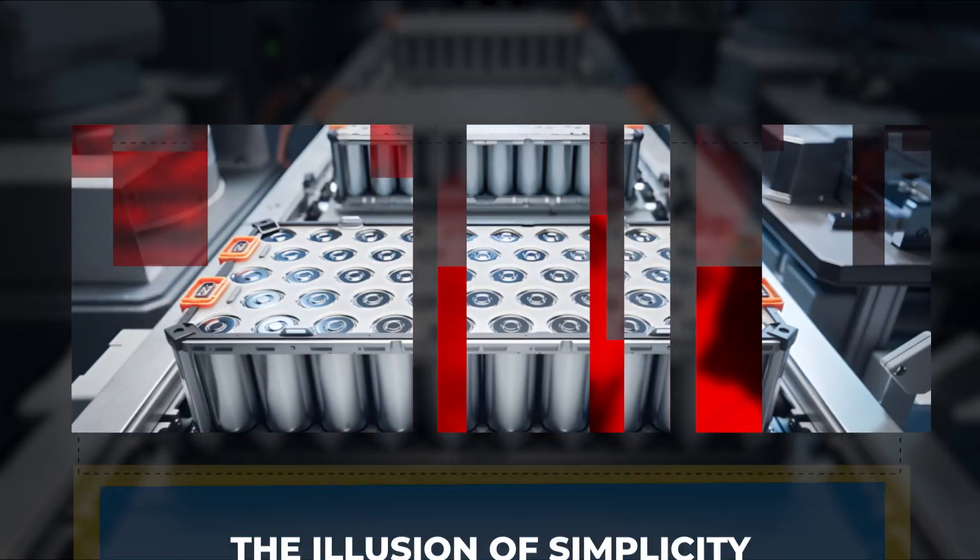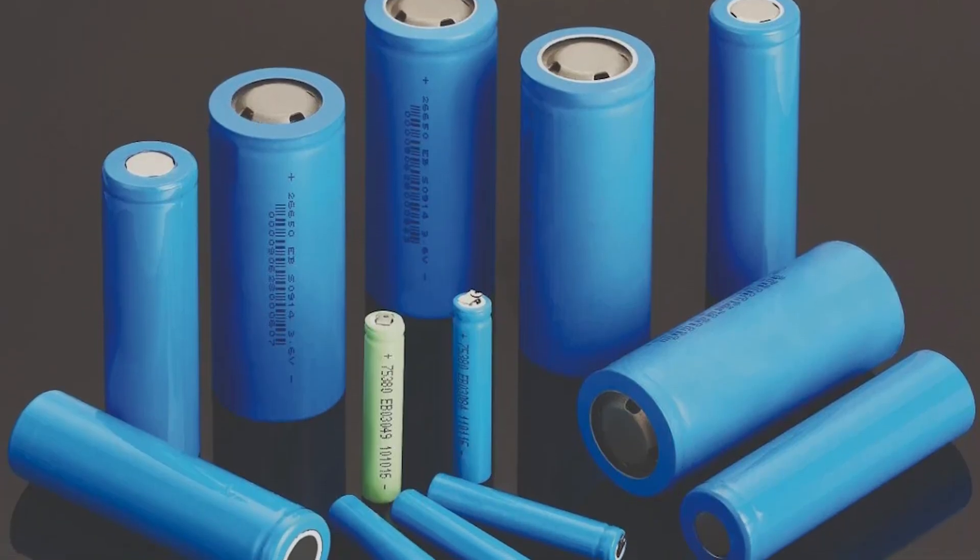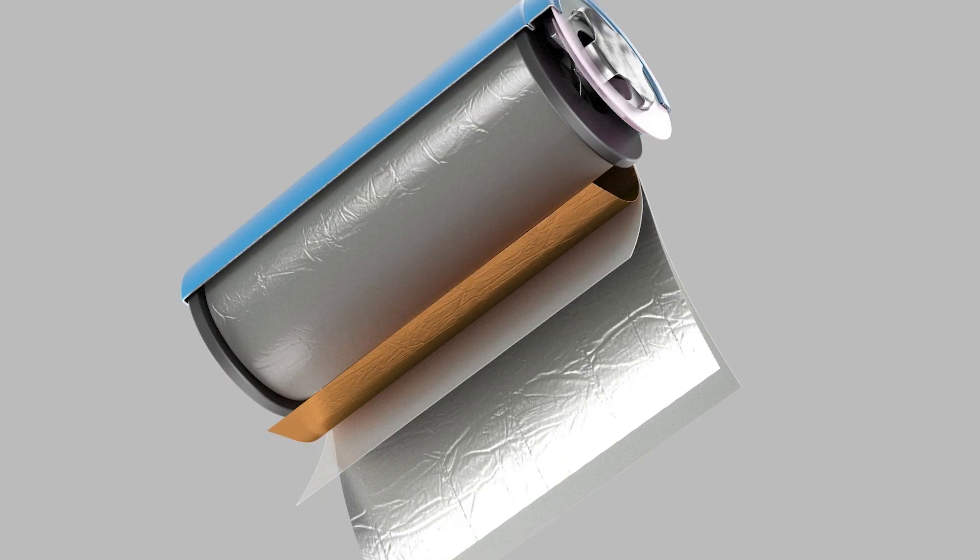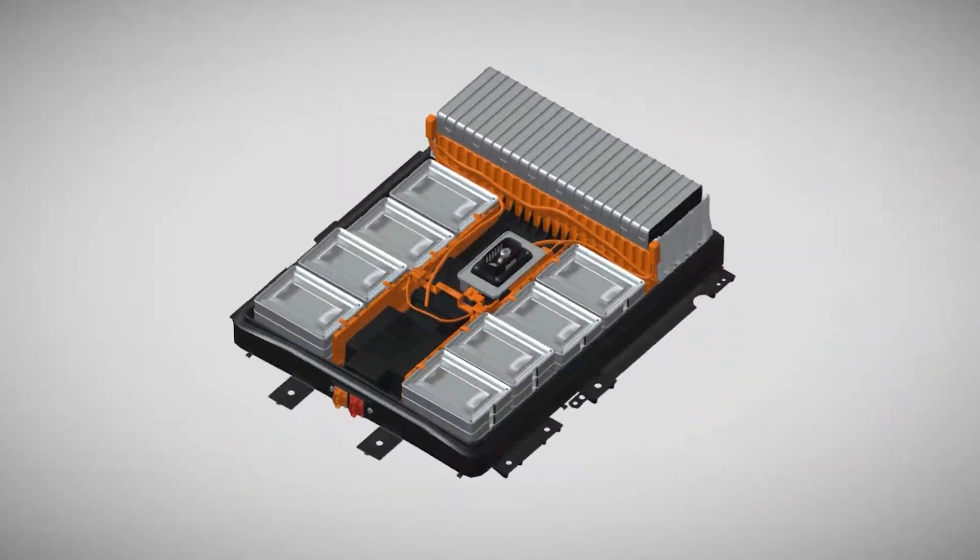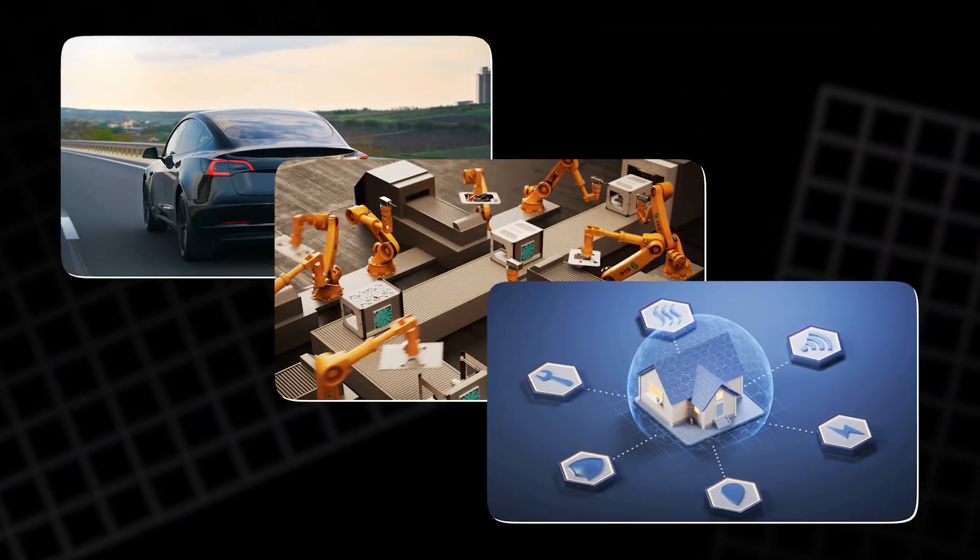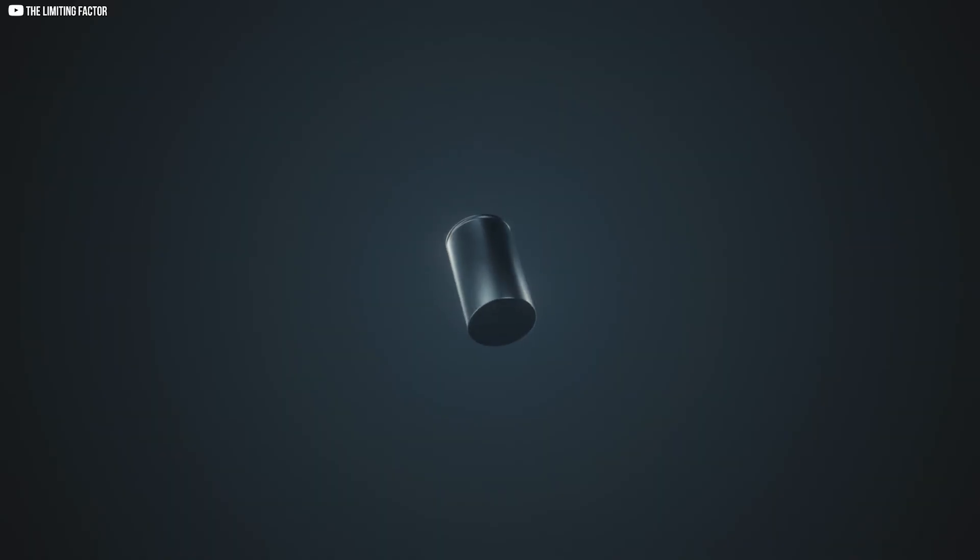At first glance, a lithium-ion battery seems ordinary. No glowing core. No visible complexity. Just layers rolled tightly together. Yet within that plain design lies enough energy to move vehicles, power industries, and sustain our digital lives. Its simplicity hides decades of science.